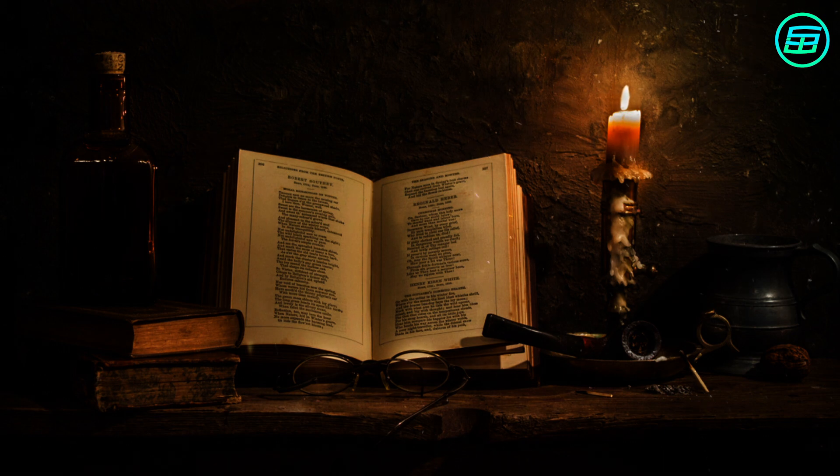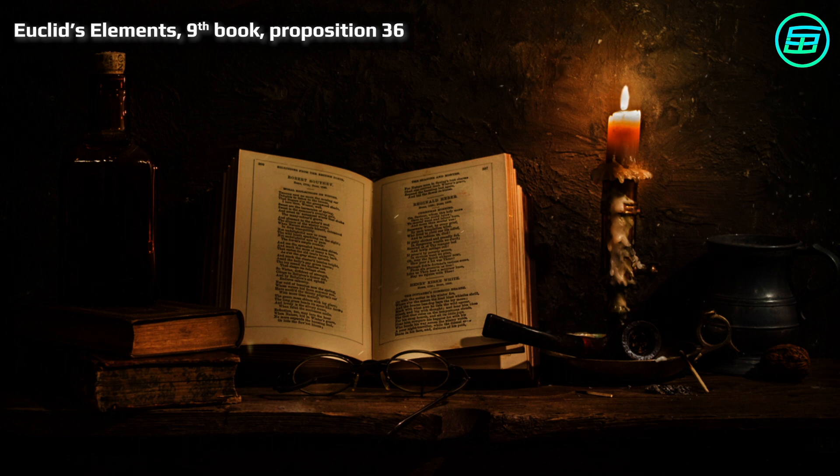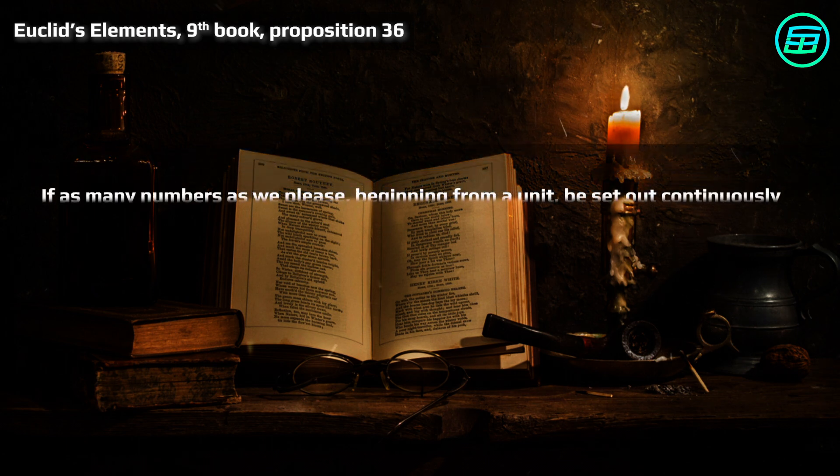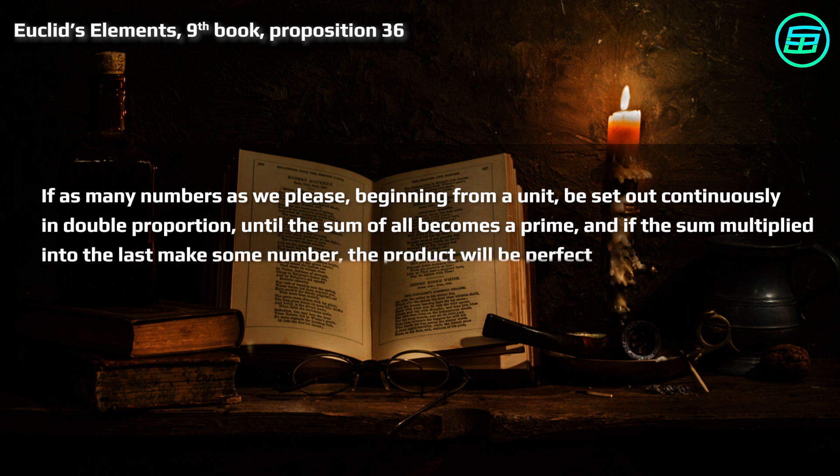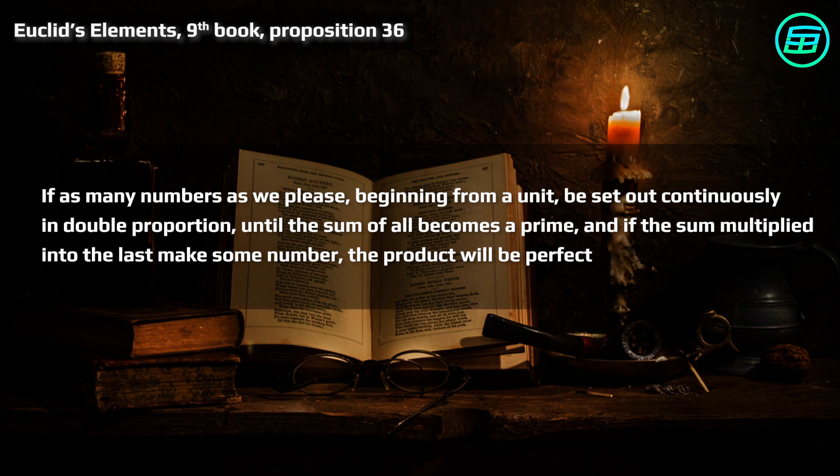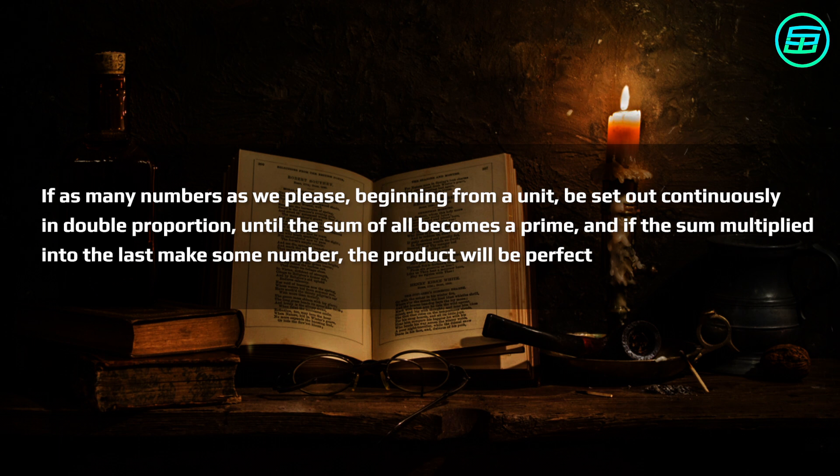Euclid showed a formulation for perfect numbers in his ninth book written in about 300 BC. He wrote, If as many numbers as we please, beginning from a unit, be set out continuously in double proportion until the sum of all becomes a prime, and if the sum multiplied into the last makes some number, the product will be perfect. This means if we double numbers starting with 1 and add them up, when the result is a prime number, we multiply that result and the last number to get a perfect number.